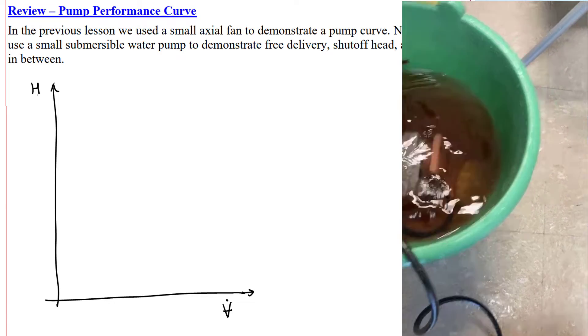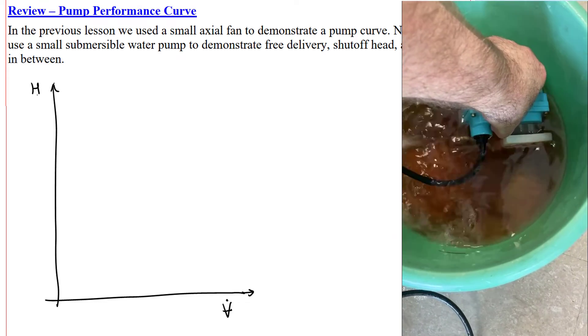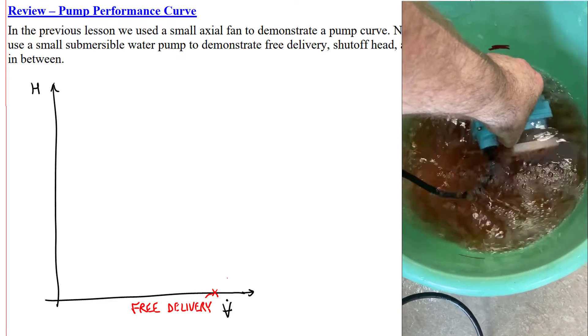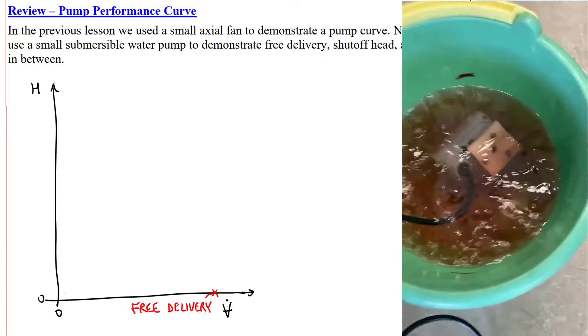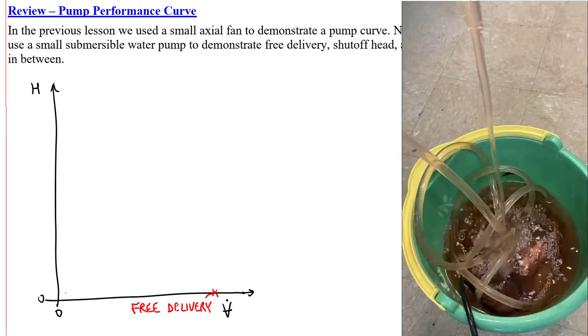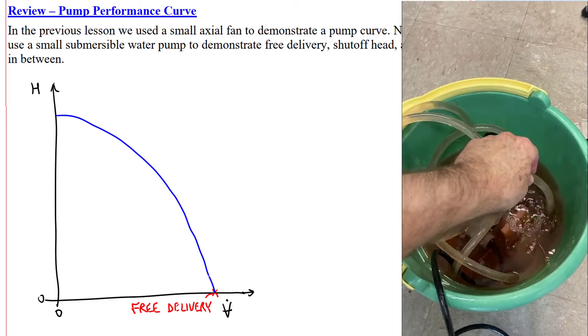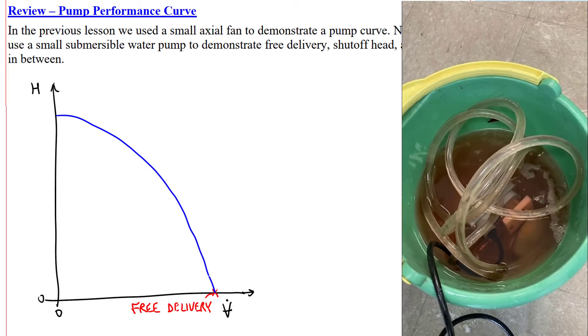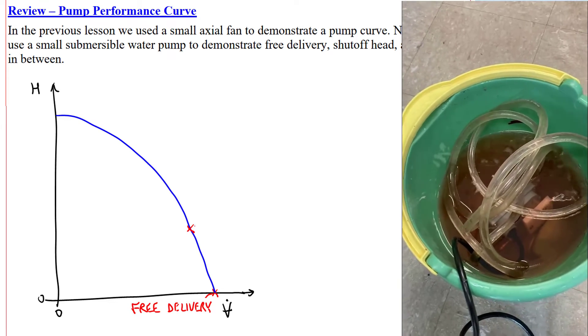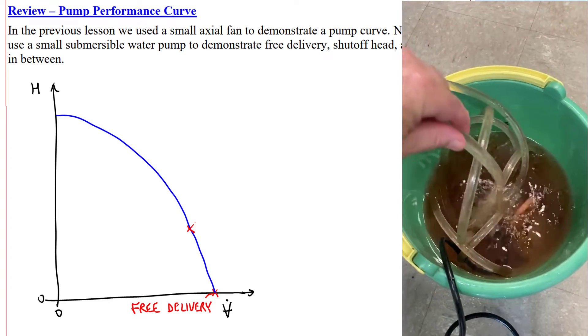When we turn on the pump, the flow rate is at its maximum. This is what we call the free delivery, which is the maximum volume flow rate that the pump can deliver, and it occurs when there's zero head. Here's a typical pump performance curve. However, we attach a flexible tube to the hose barb at the outlet. Now there is a head loss, but the volume flow rate will be lower. We're operating somewhere here.